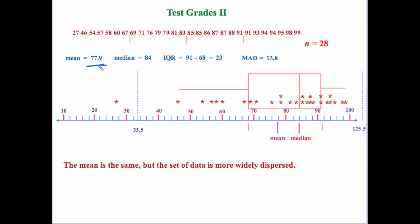Again we did all the number crunching — we took all of our individual data points and figured out how far away they are from 77.9, and we get a mean absolute deviation of 13.8. Notice that even though the mean is the same the data looks a lot different. This time the data is a lot more spread out, it's more dispersed.